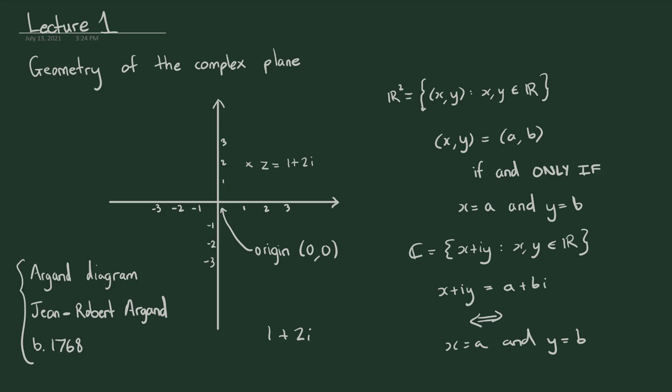When talking about the components of 1 + 2i, note that 1 doesn't have an i next to it but 2 does. We call 1 the real part and 2 the imaginary part. Because of this, we label the x-axis the real axis and the y-axis the imaginary axis. With this convention, all complex numbers x + iy can be plotted exactly as members of R², and the same rules for vector addition, scalar multiplication, and vector subtraction hold in the complex plane.